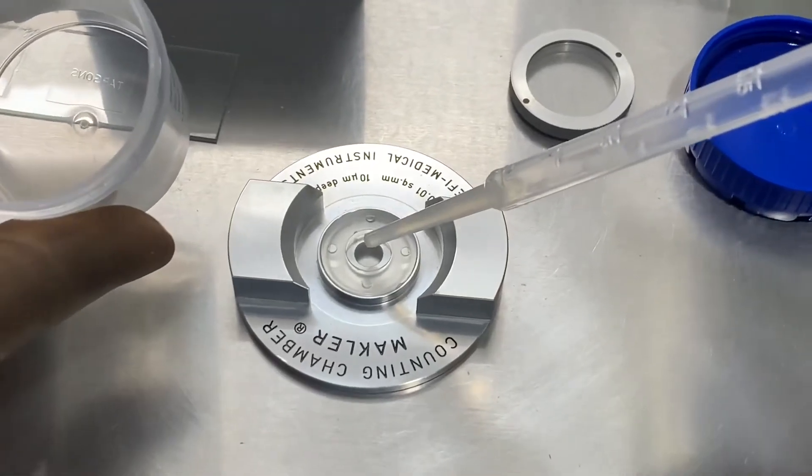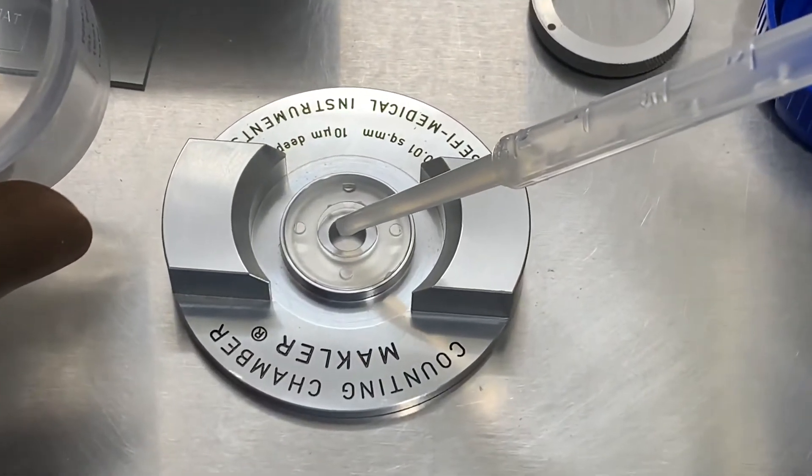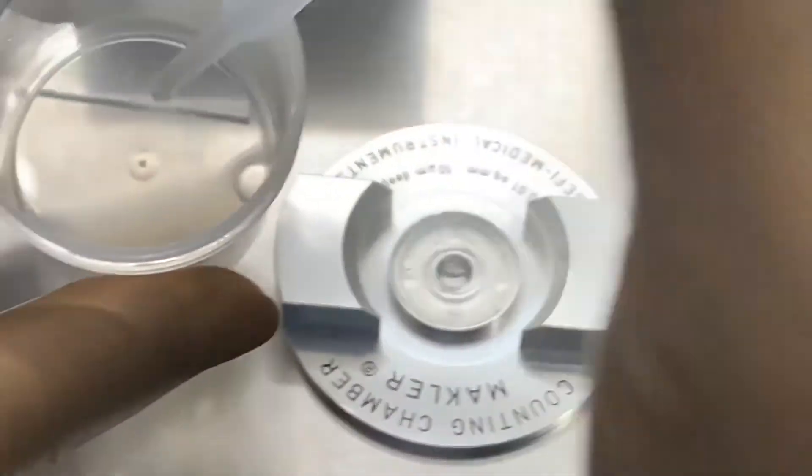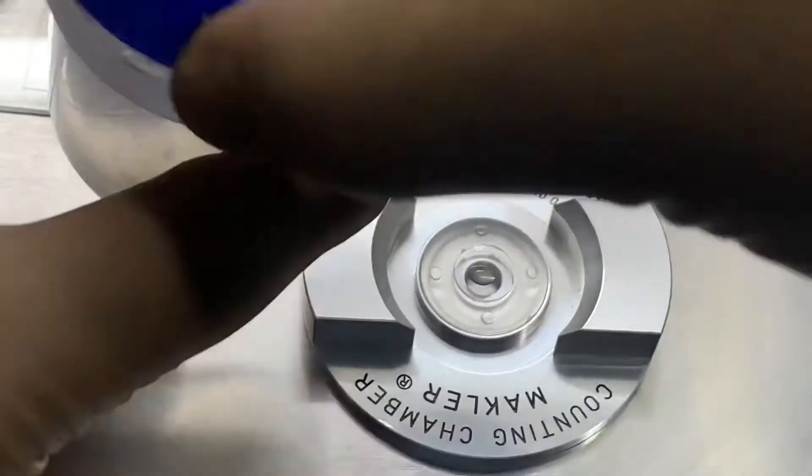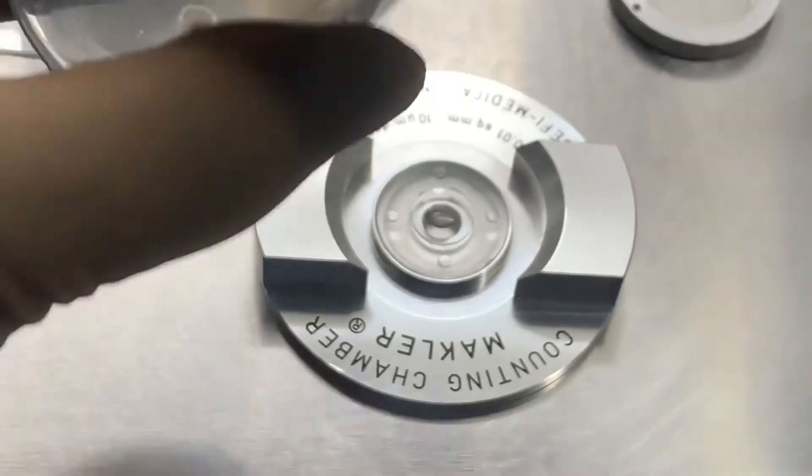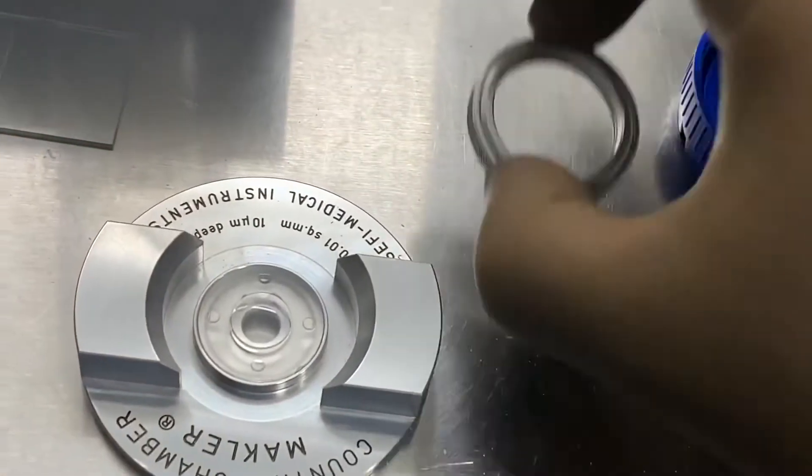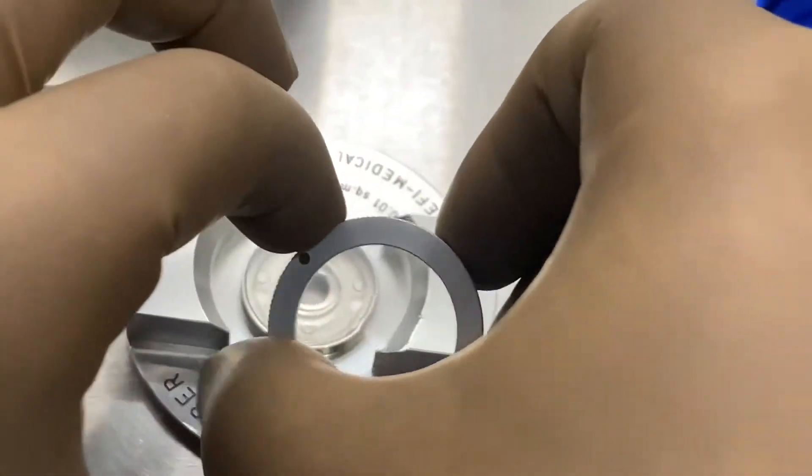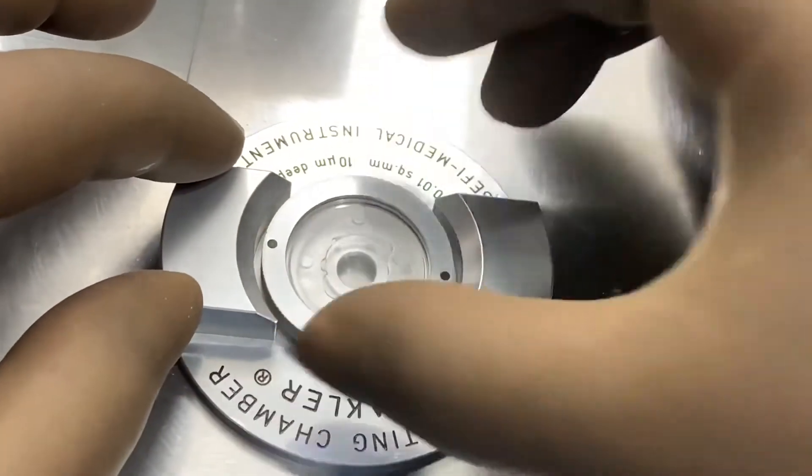And after that, a single drop of semen would be kept on the makler chamber. Then the makler chamber is properly loaded with the coverslip.